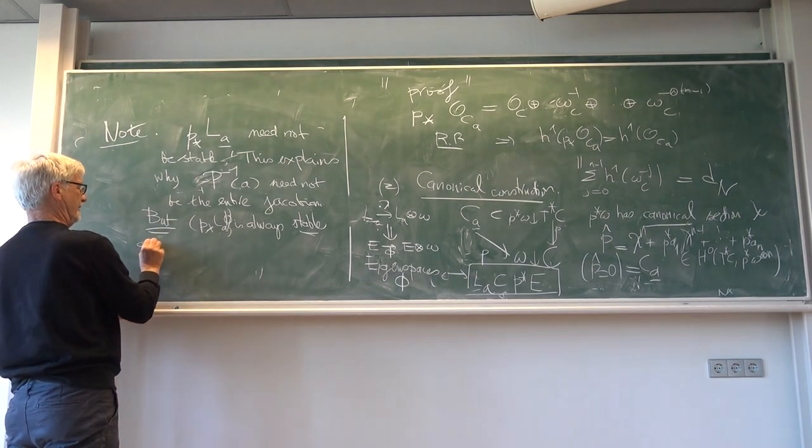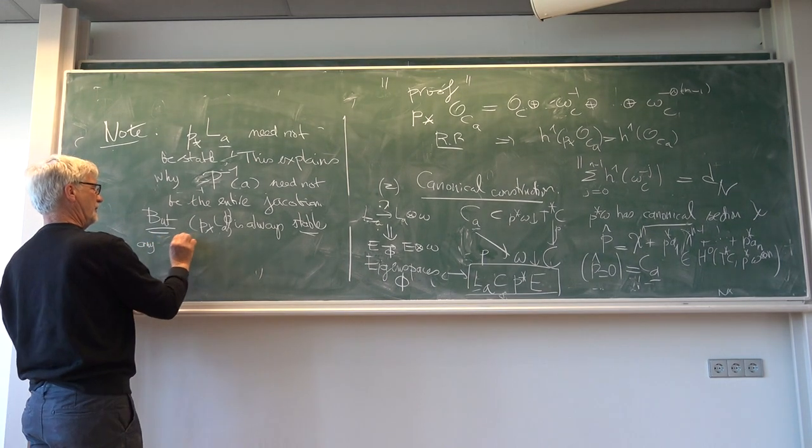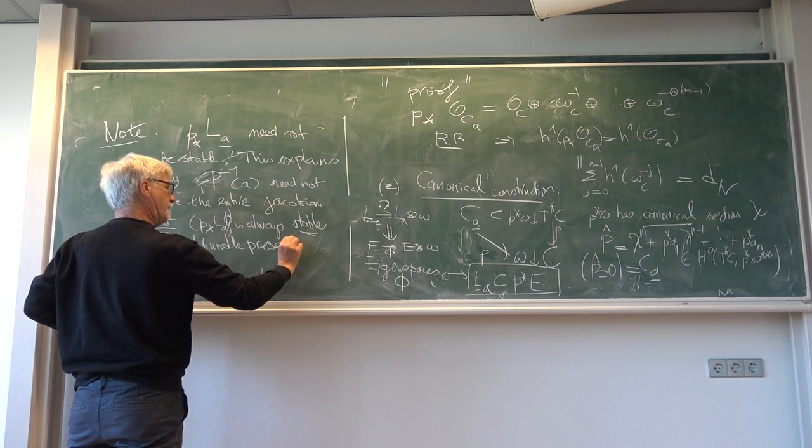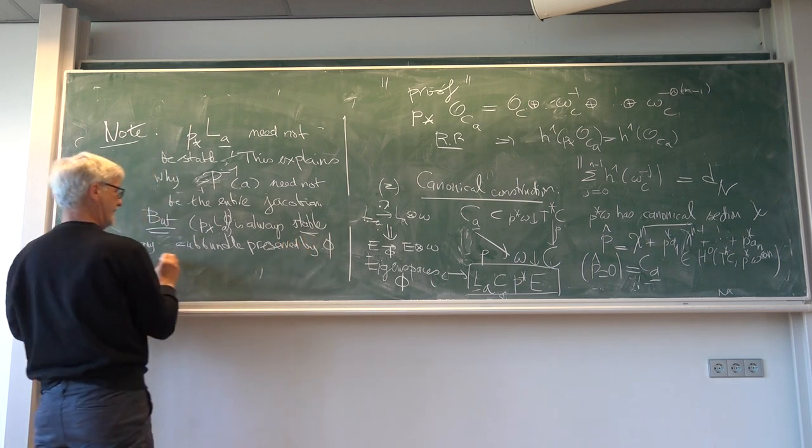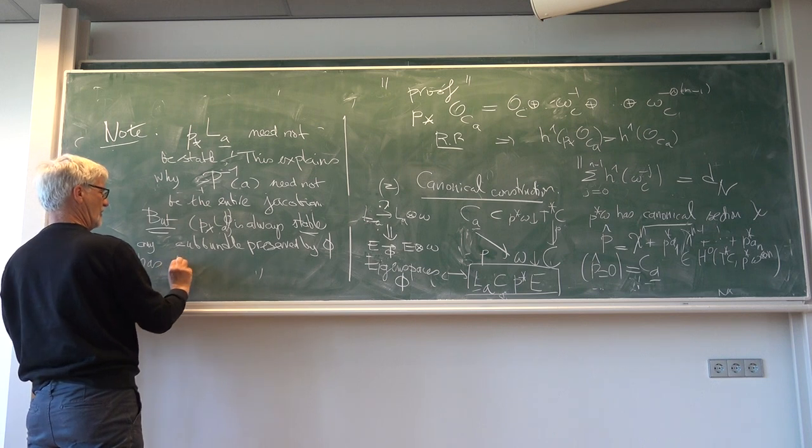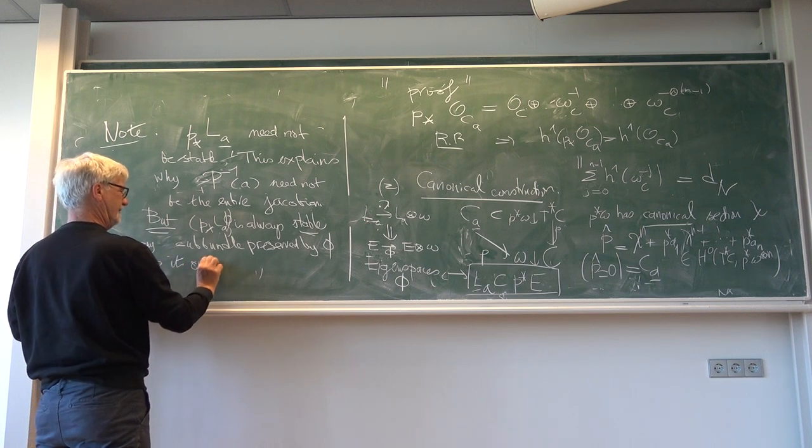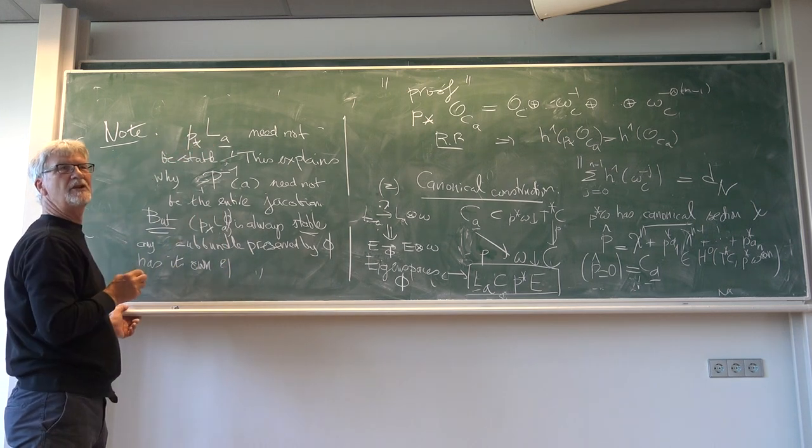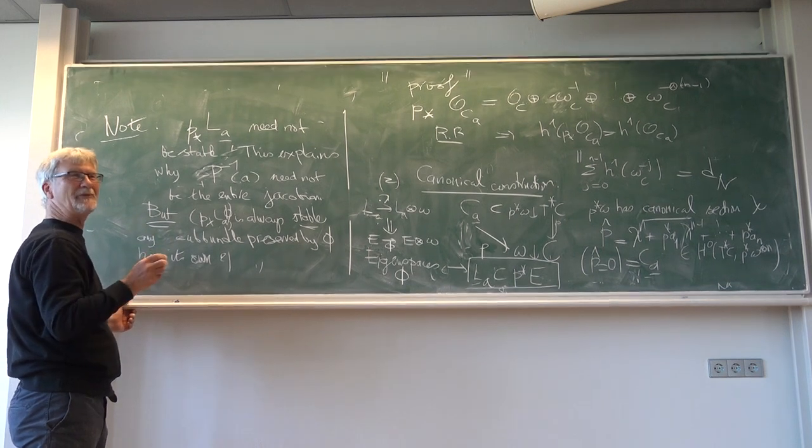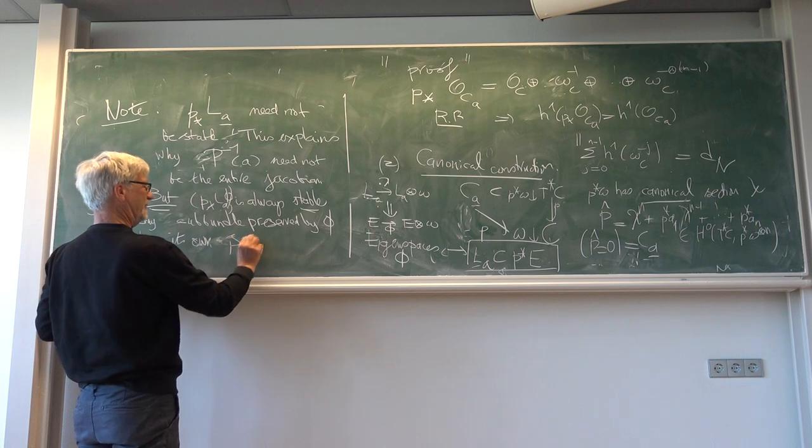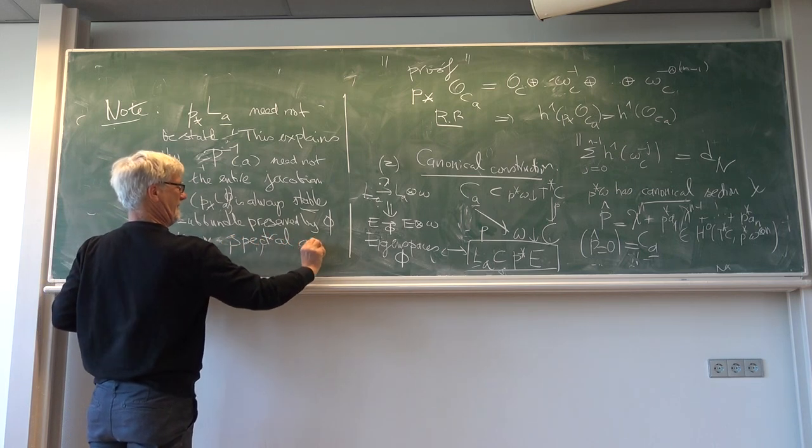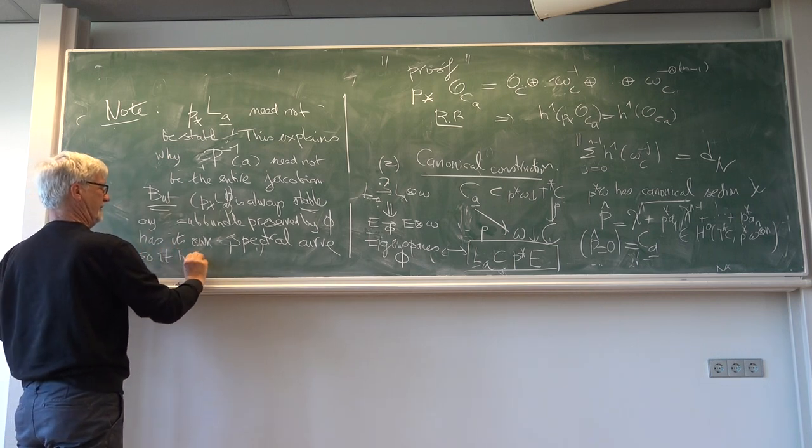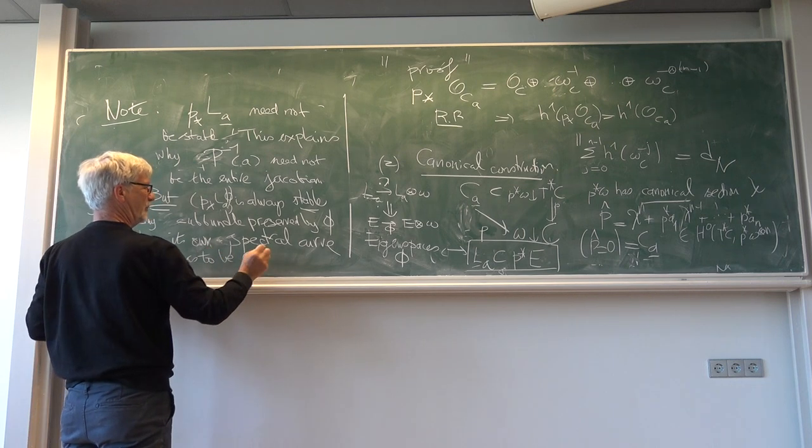Any sub-bundle preserved by phi has its own spectral curve. By the way, these CAs are called spectral curves for the obvious reason because it parametrizes the spectrum of phi. So it has to be CA and not a proper part.